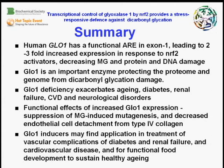Glyoxalase 1 is an important enzyme protecting the proteome and genome from dicarbonyl glycation damage. Glyoxalase 1 deficiency exacerbates aging, diabetes, renal failure, cardiovascular disease, and certain neurological disorders. Functional effects of increased glyoxalase 1 expression include decreased mutagenesis by methylglyoxal and decreased detachment of endothelial cells from extracellular matrix. Glyoxalase 1 inducers may find application in treatment of vascular complications of diabetes, renal failure, cardiovascular disease, and for functional food development to sustain healthy aging.